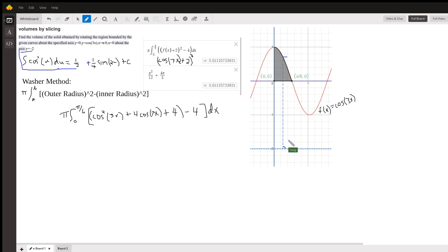So the outer radius is the distance from the axis of revolution up to here. Well, this distance right here is the cosine of 3x, the y value of the function. So it's the top point, which is the cosine of 3x minus this y coordinate here, which is negative 2. So that's the cosine of 3x plus 2, which is what I have right here. That's the outer radius squared.